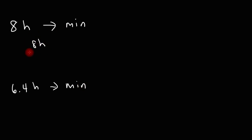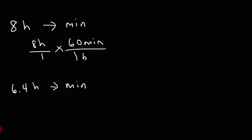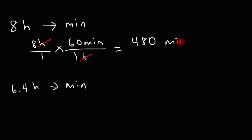We have eight hours and there are 60 minutes per hour, so we can cancel those units. It's 8 times 60. We know 8 times 6 is 48, so 8 times 60 — just add the zero — that's going to be 480. So that's the answer for this example.